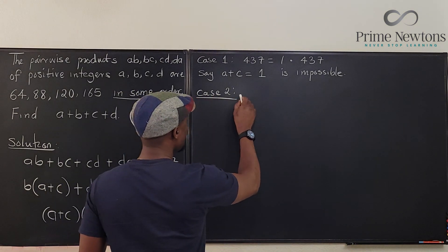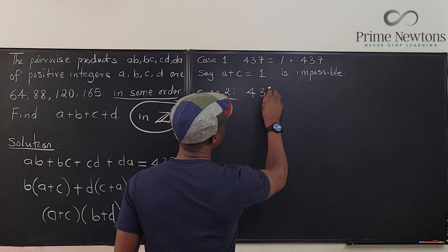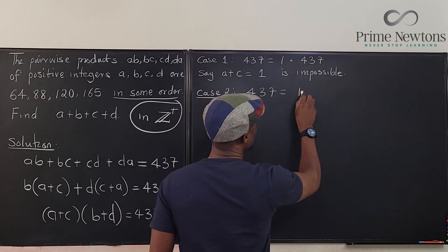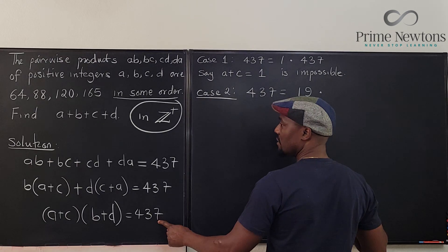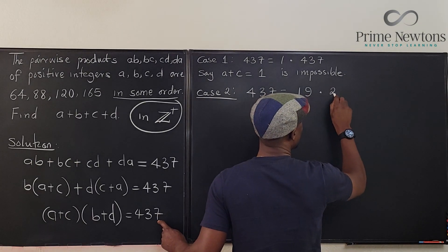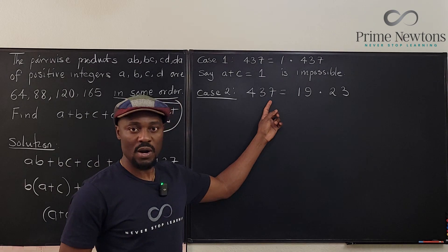But on the way to getting to 21, you're going to find a number that divides this, and the number is 19. You have to just figure it out. So here, we know case 2, we say that 437 is equal to 19 times, what would you multiply by 9 to end in 73? That has to be 23. So 19 times 23 is equal to 437.